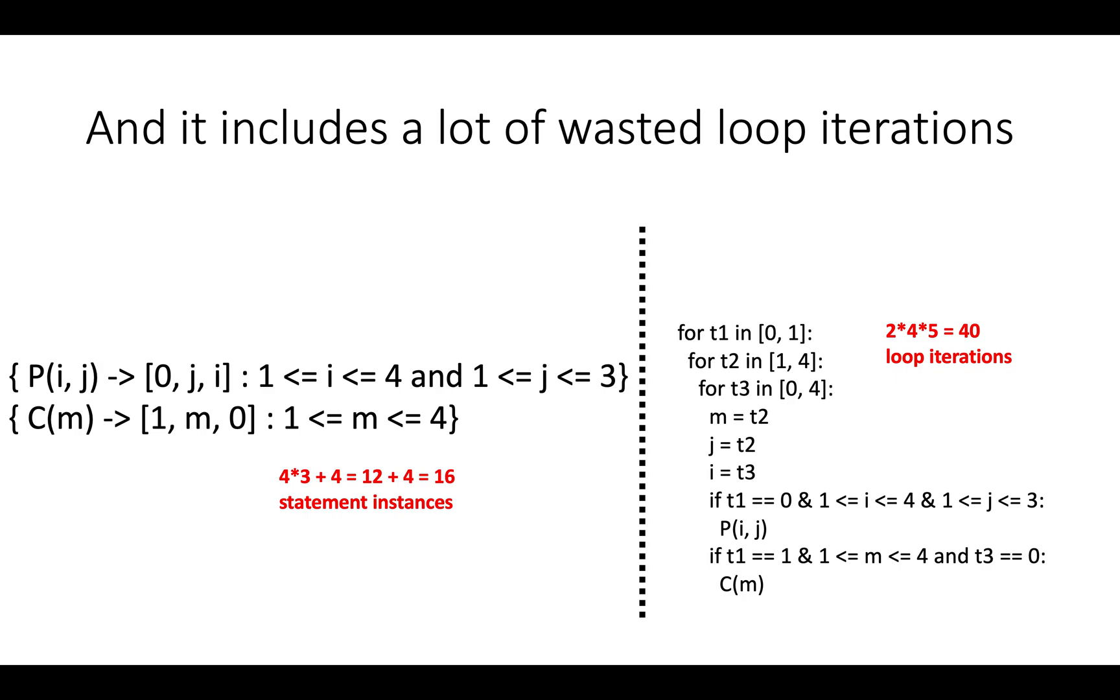And to make matters worse, it includes a lot of wasted loop iterations. So if you look at this schedule, P(i,j) happens for every value of i between 1 and 4 inclusive and j between 1 and 3 inclusive, which is 12. And C(m) happens for every value of m between 1 and 4, which is 4. So in total, there are only 16 statement instances that will happen in the execution of this program.